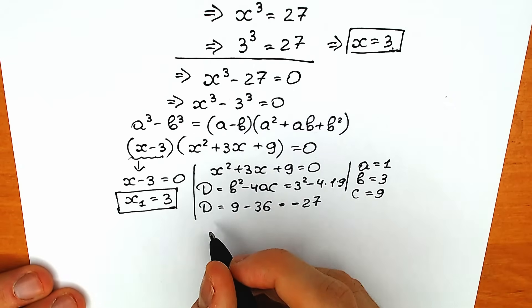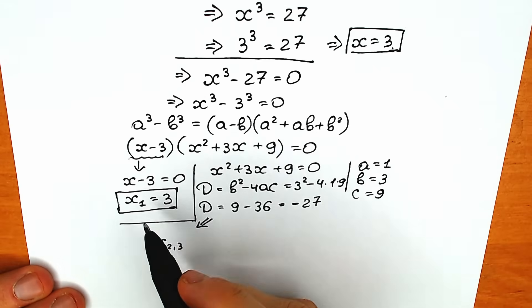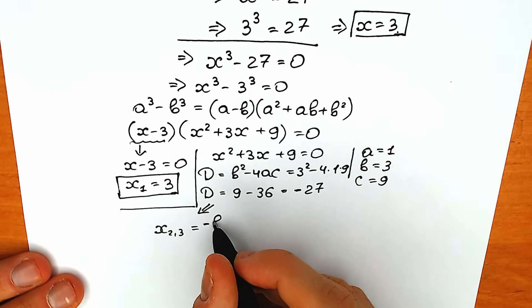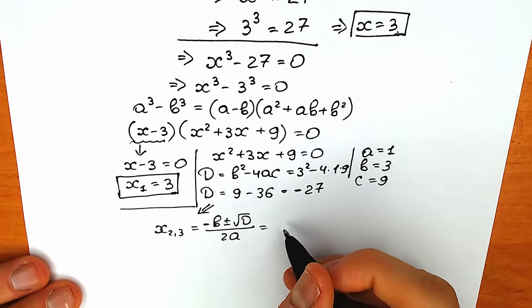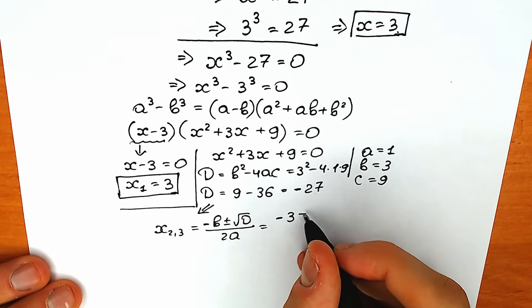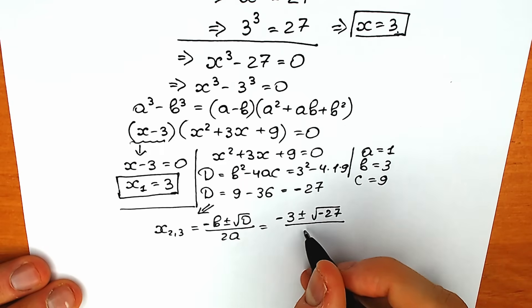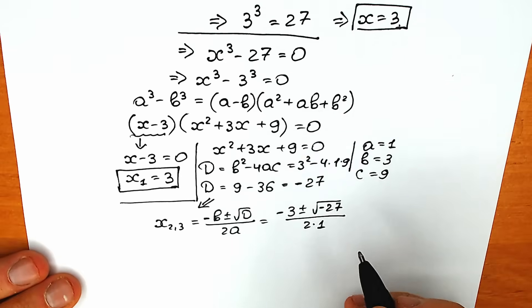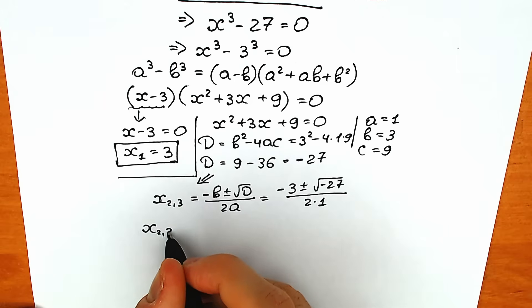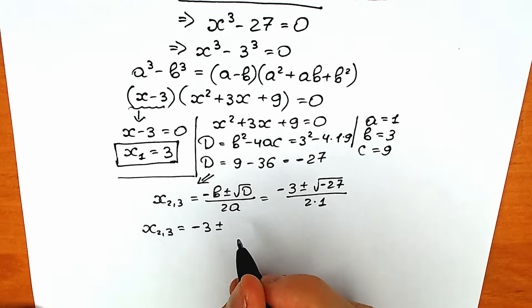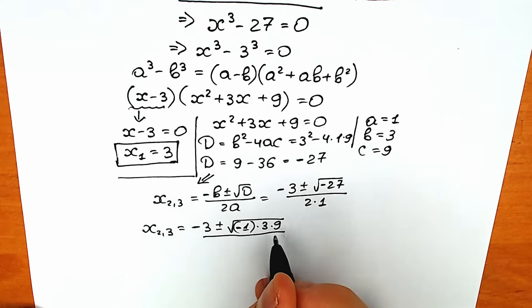Let's find x₂ and x₃. We already found x₁. Using the quadratic formula: x₂,₃ equals minus b plus or minus square root of D, divided by 2a. That gives us minus 3 plus or minus square root of minus 27, divided by 2. We can split the square root of minus 27 as square root of minus 1 times 3 times 9, divided by 2.